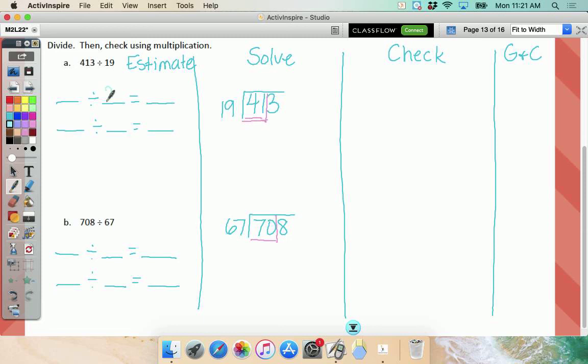So 19 rounds to? 20. So I'm going to skip count by twos. 20, 40. I'm just going to stop there. So you think it's 19 times 2? So over in my guess and check, what will I write? 19 times 2 is 38. That's where your help stops on this one. On this one, what am I going to round the 67 to? 70.